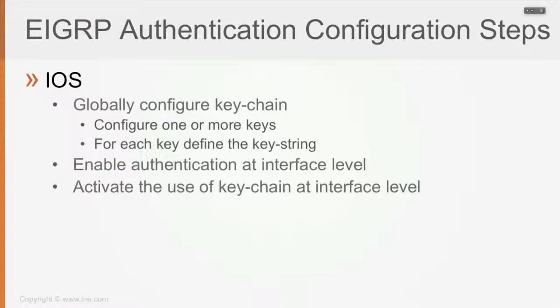So once you have defined the keychain with key numbers and key strings, then you go at the interface level and enable EIGRP authentication, and the third step is to actually activate the use of the keychain, likewise at the interface level.